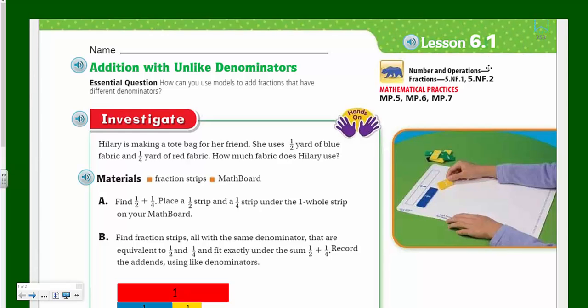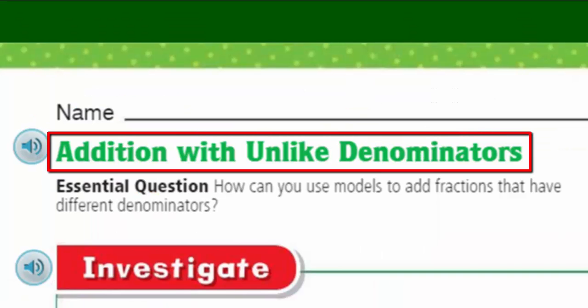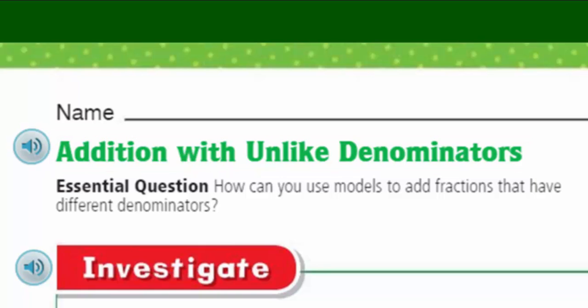And we have a great topic, which is going to be addition with unlike denominators. And of course, we have our essential question, our little guiding learning target, if you will. How can you use models to add fractions that have different denominators?